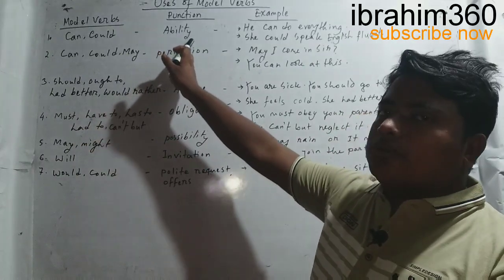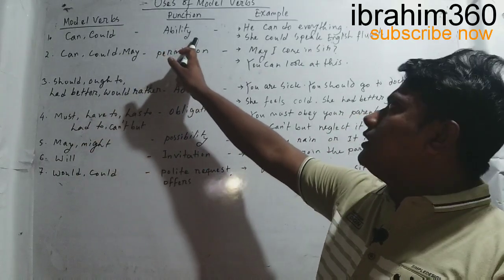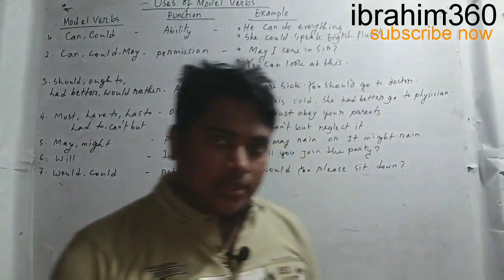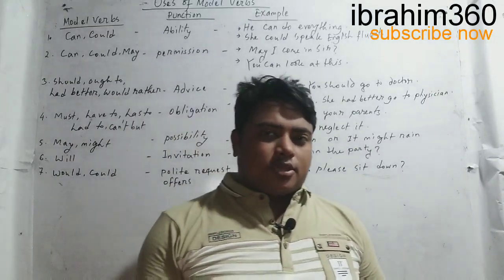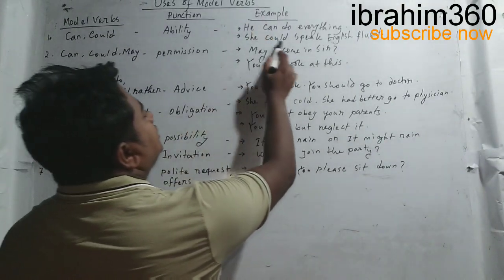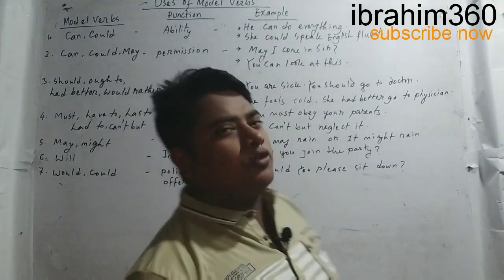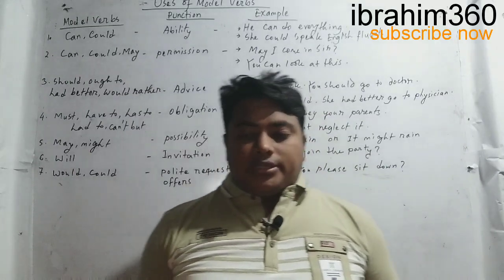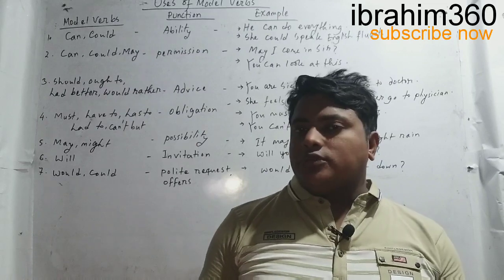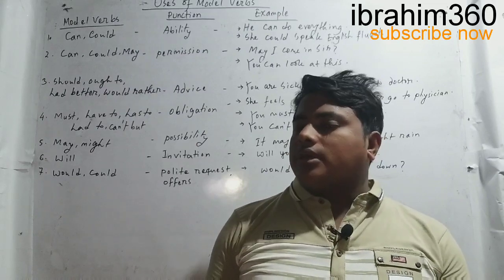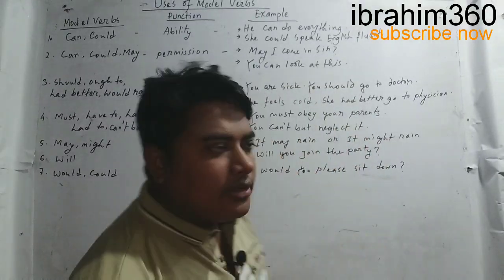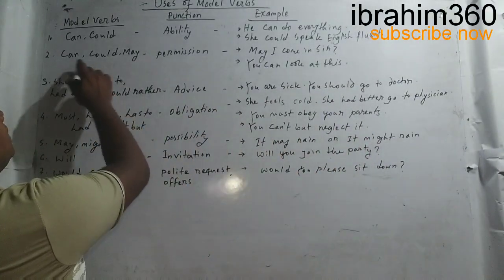Can expresses ability. For example, can and could are used to express ability. She could speak English fluently. Can and could can also express possibility. For example, can, could, and could be are all used in different contexts.